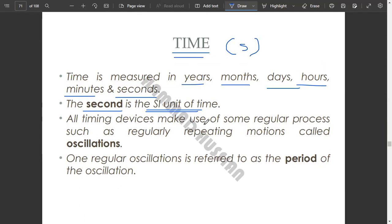All timing devices make use of some regular process, such as regularly repeating motions called oscillations. Oscillation, we use this as a period to a distance specific time period travel. A regular process repeating motions. One regular oscillation is referred to as the period of the oscillation.